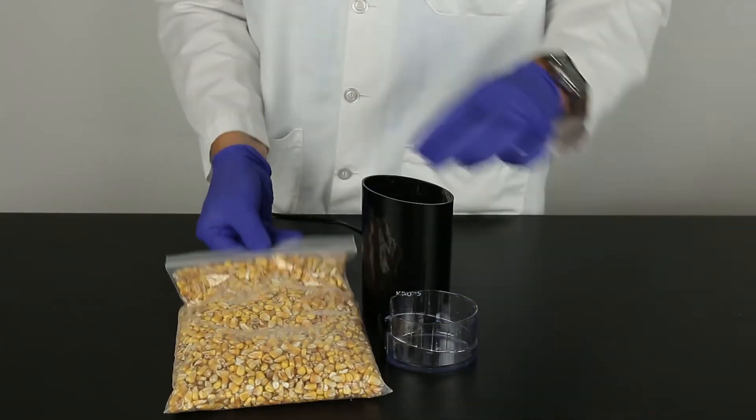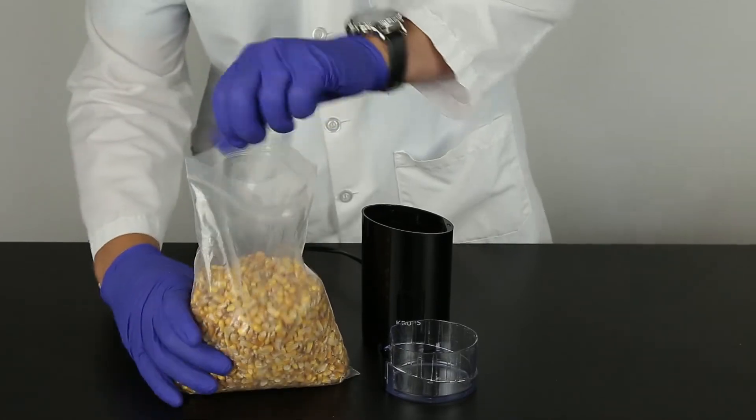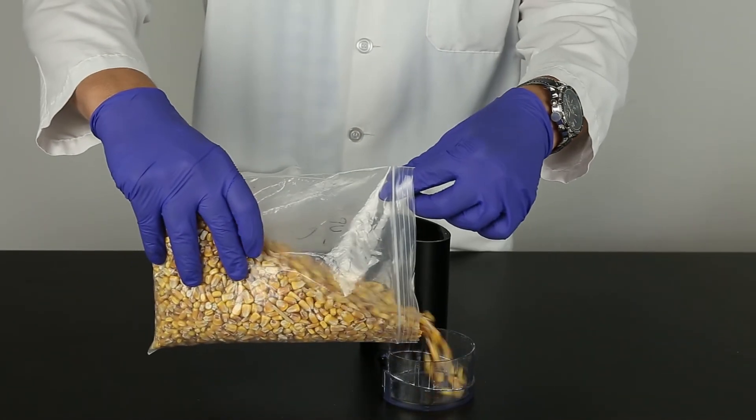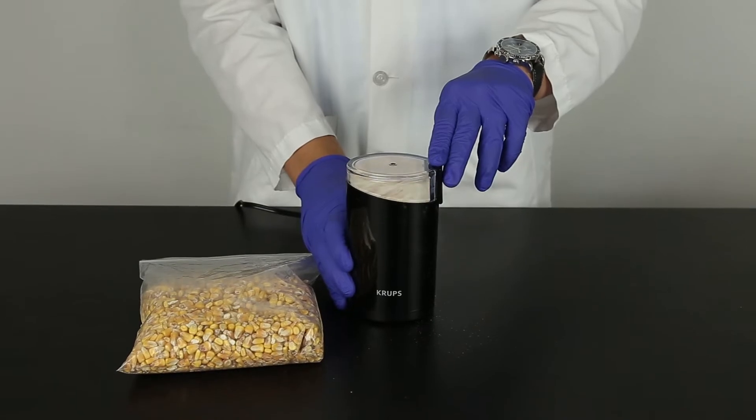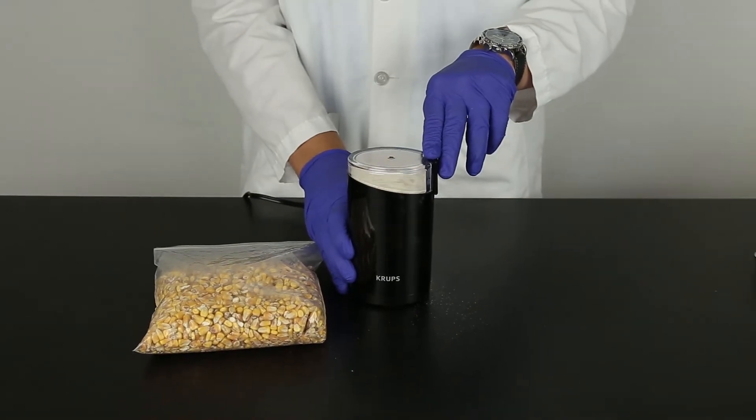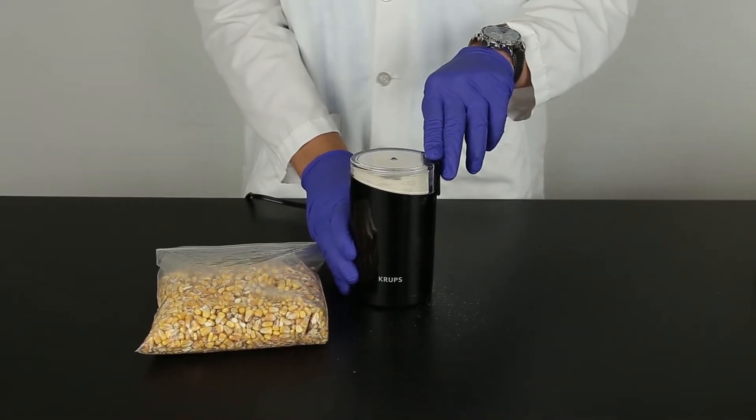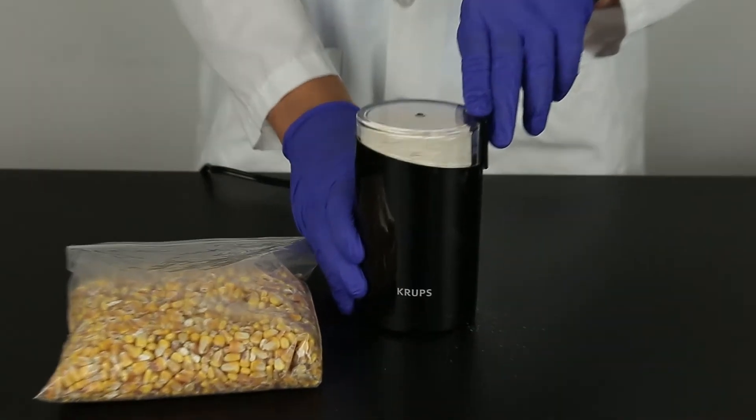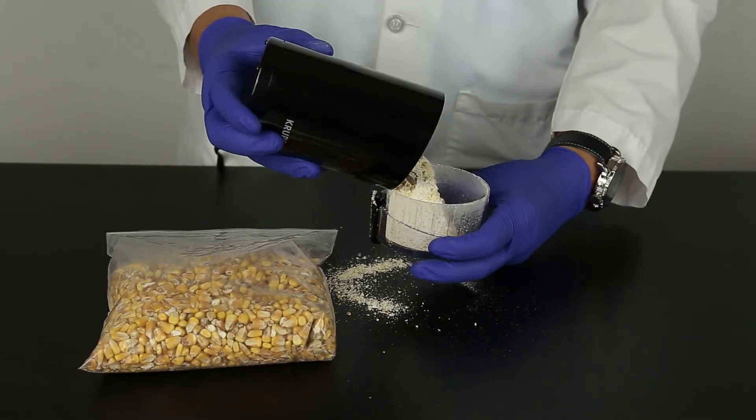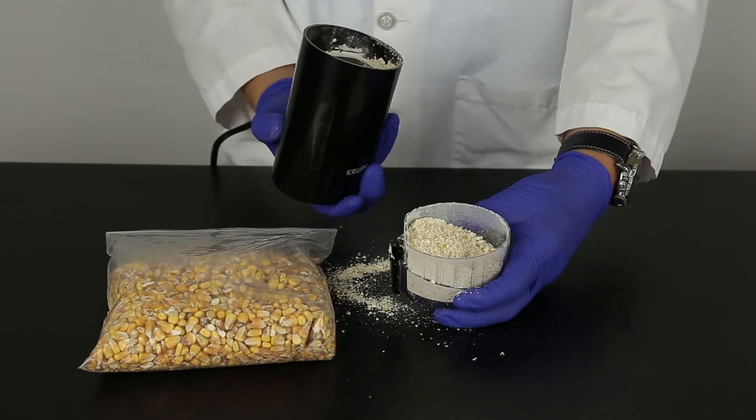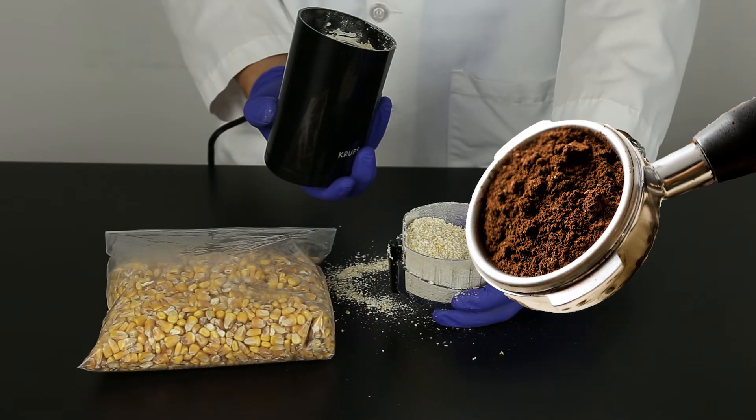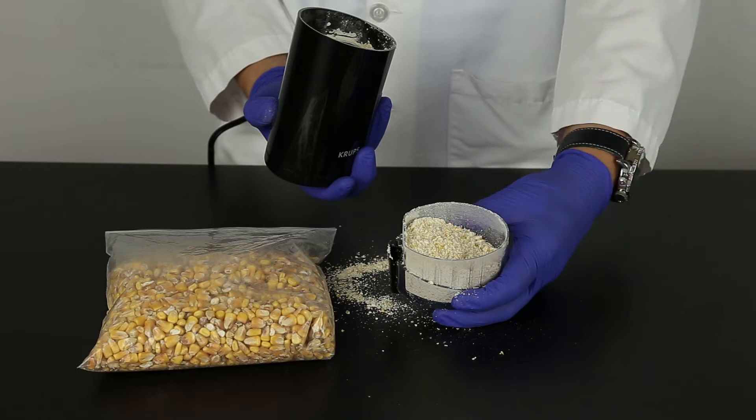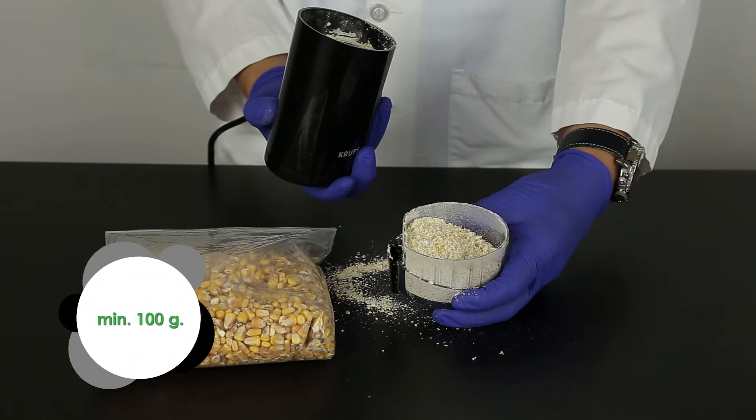The sample to be tested should be collected according to accepted sampling techniques. See the FGIS sampling protocol or contact your Neogen representative. Obtain a representative sample and grind so that at least 95% of the ground material passes through a 20 mesh sieve. The particle size should be about the same as espresso. It is best to grind a minimum of 100 grams of your sample.